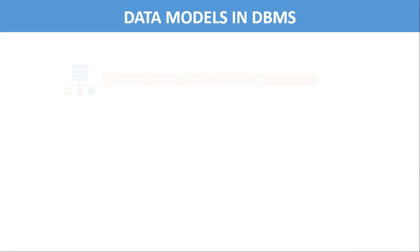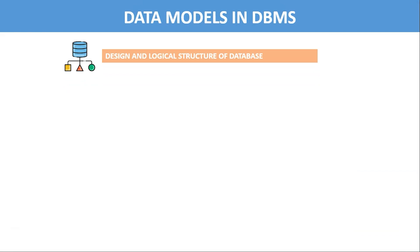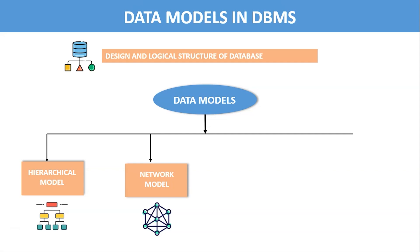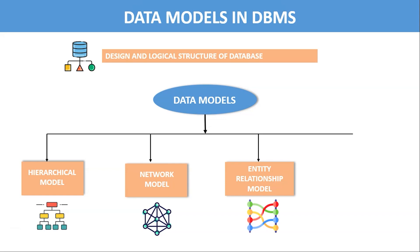Data models in DBMS. A data model defines how data is connected to each other and how it is processed and stored inside the system. It also defines the logical structure and design of data in DBMS. Data models are broadly classified into four types. The first is the hierarchical model, one of the first DBMS models ever used, where data is organized in a tree-like structure and connected by links. The next is the network model, an extension to the hierarchical model, which can represent complex data relationships using a graph-like structure where data can have many-to-many relationships. The third is the entity-relationship model, where real-life entities are represented in a pictorial form using different shapes. Finally, the relational model — one of the most commonly used models — represents data in the form of tables.